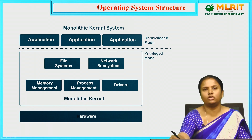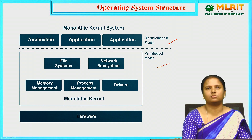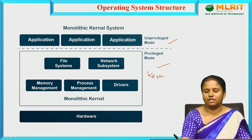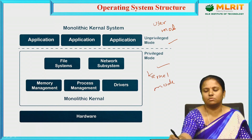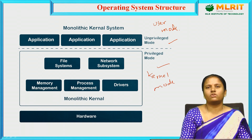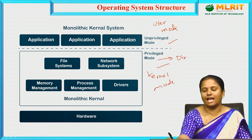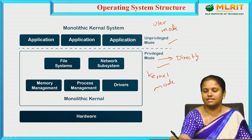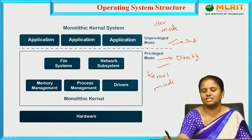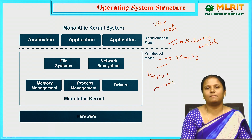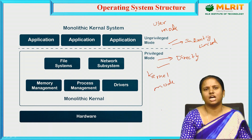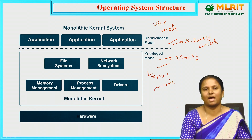In the monolithic structure diagram, we have two modes: unprivileged mode and privileged mode. Privileged mode is the kernel mode, which can access everything directly. Unprivileged mode is the user mode, which can only access resources indirectly and within a limited time span.